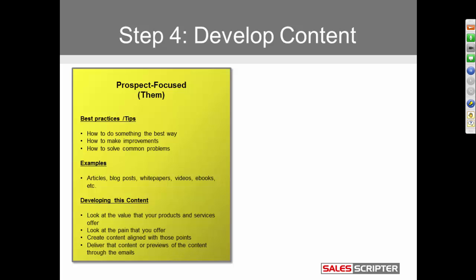You also want to look at the problems your products help to resolve. For example, my software may help a sales manager decrease the turnover of their salespeople. That's a big problem, so I could develop a blog post around the costs associated with sales staff turnover. That blog is a derivative of a pain point I help to fix. The way you arrive at content topics is by looking at the benefits and problems you help to address, then develop videos or written content around those.